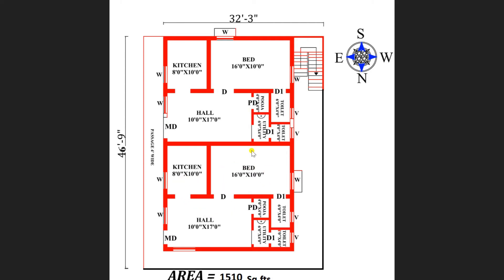From the hall, I am entering the master bedroom of dimension 16 feet by 10 feet. This bedroom is attached with a toilet of 6 feet by 4 feet — a very comfortable and lavish area for the master bedroom. Returning to the hall, there is a puja room of 4 feet by 4 feet, a utility area of 6 feet by 4 feet, and a common toilet of 4 feet by 4 feet.